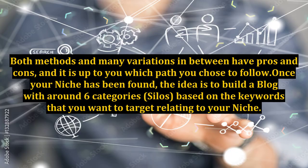Both methods and many variations in between have pros and cons, and it is up to you which path you choose to follow. Once your niche has been found, the idea is to build a blog with around six categories — silos — based on the keywords that you want to target relating to your niche.